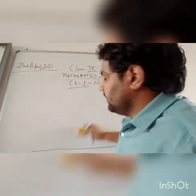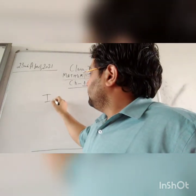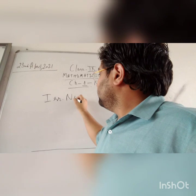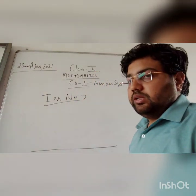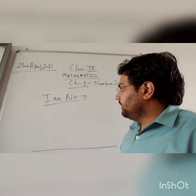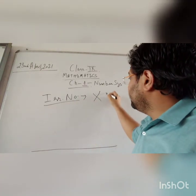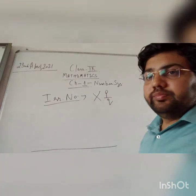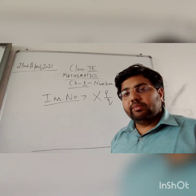Now coming to the next concept, irrational numbers. Now all those numbers which are not rational, they are irrational. Like they cannot be written in the form of P by Q. Rational numbers were terminating or non-terminating but repeating.